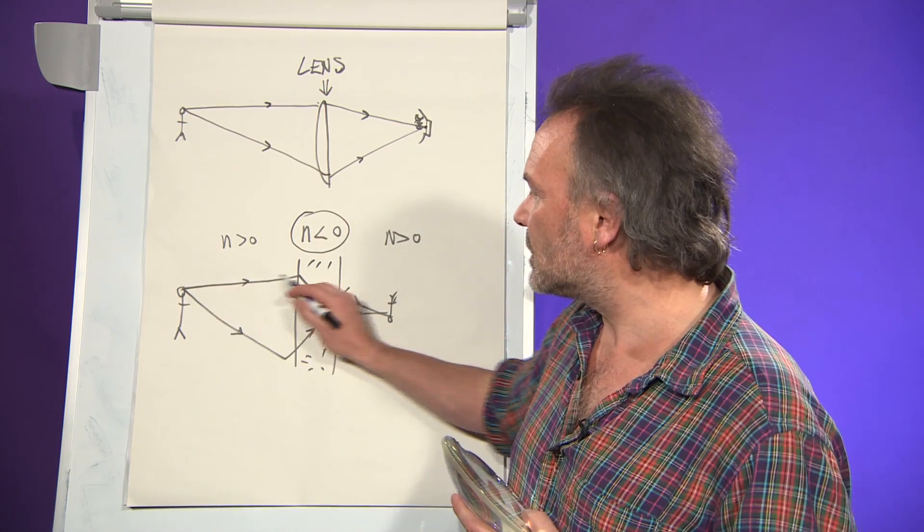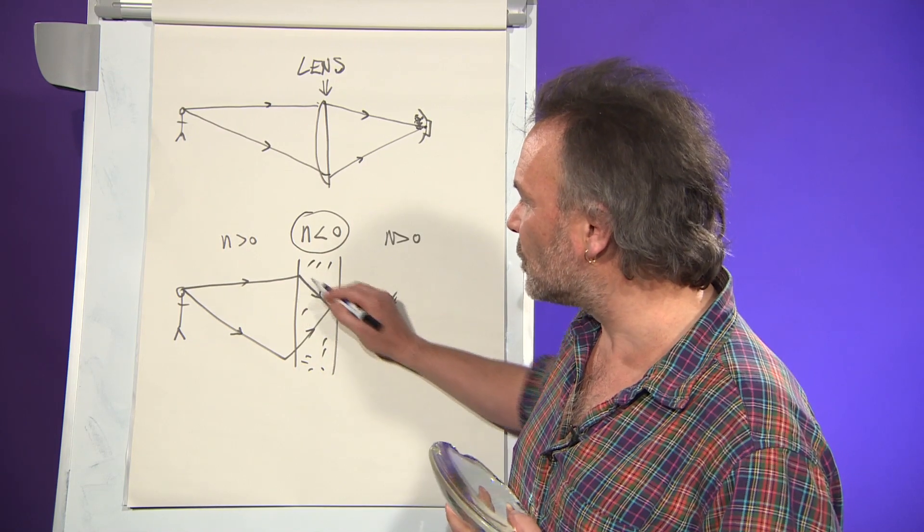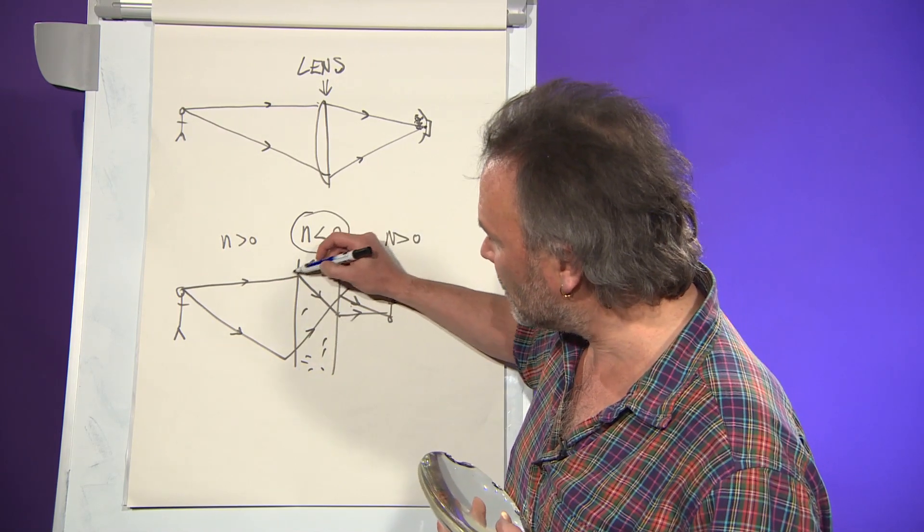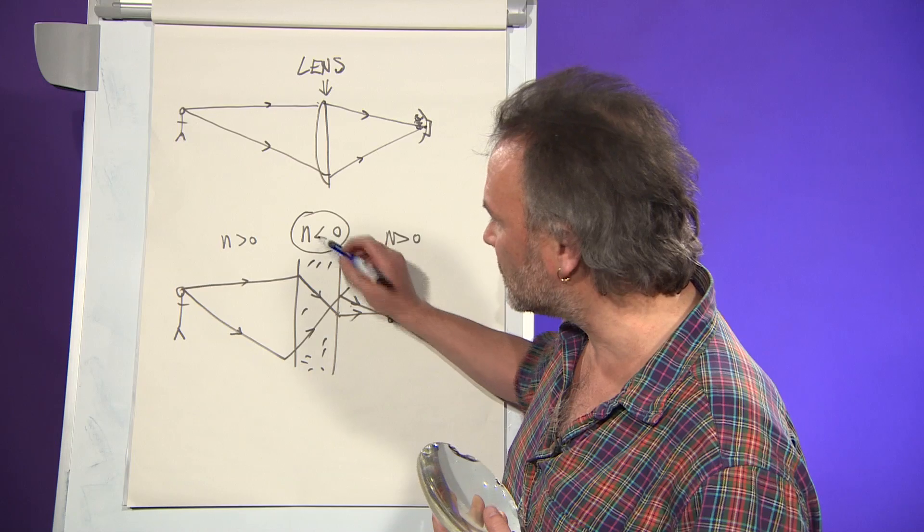The result of that is when the light enters the glass, it doesn't bend towards the normal. It bends in the opposite direction. At this angle, it's a negative angle because it's a negative refractive index.